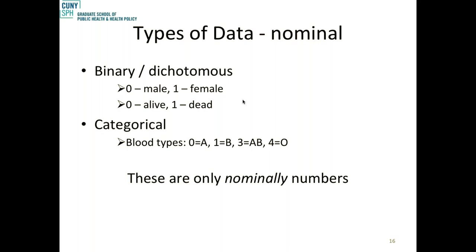Those numbers — zero for male, one for female — are not really numbers; they still represent a name. They're still nominal data, even though they're written as numbers. Ordinal data is like a performance scale: zero means fully active, one can do light work, two can do no work but ambulatory more than 50% of the time, three ambulatory less than 50%, and four completely disabled. The order makes a difference — as the number gets higher, the level of disability gets higher — but you can't quantify the difference between levels. You can just say one is worse than the other.